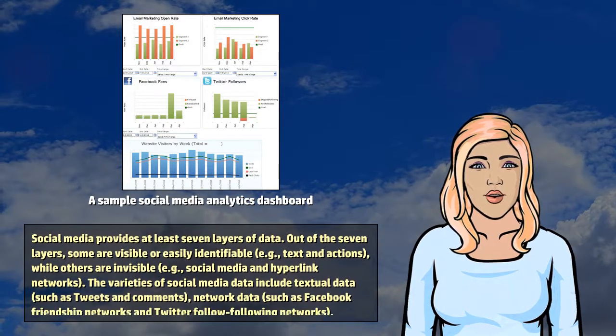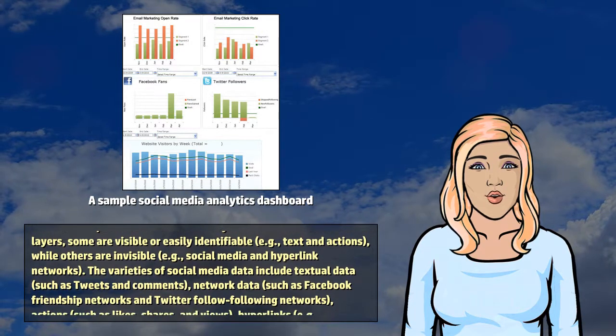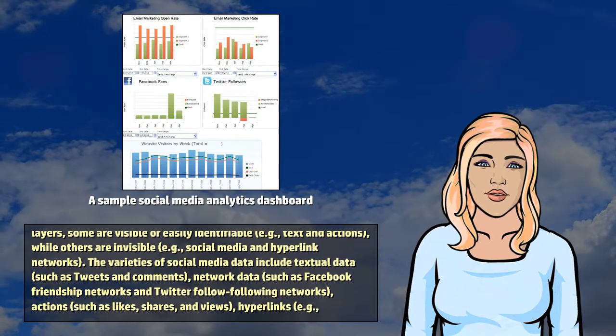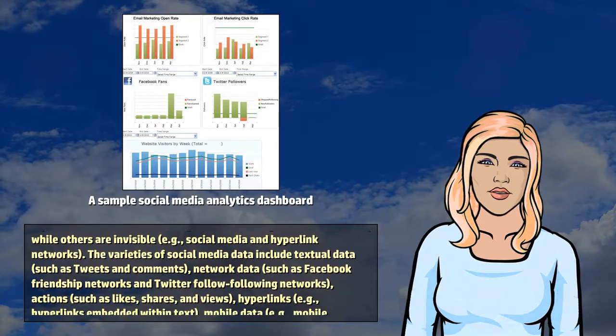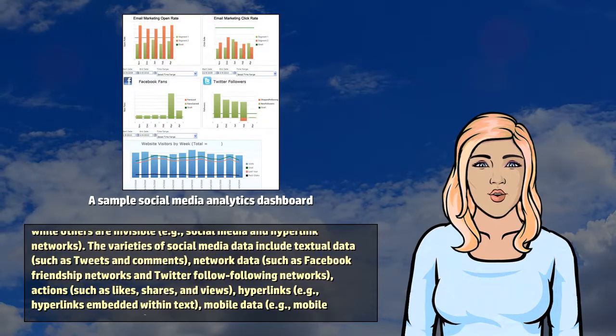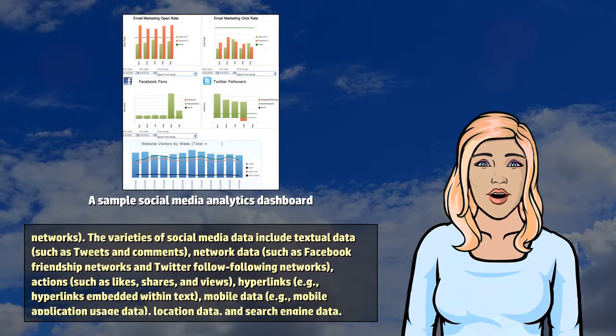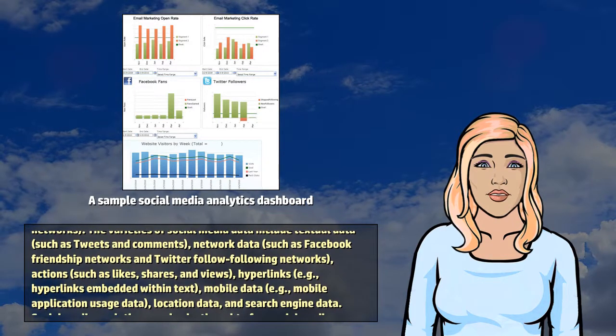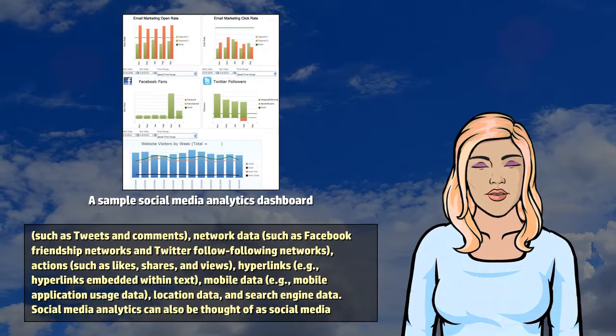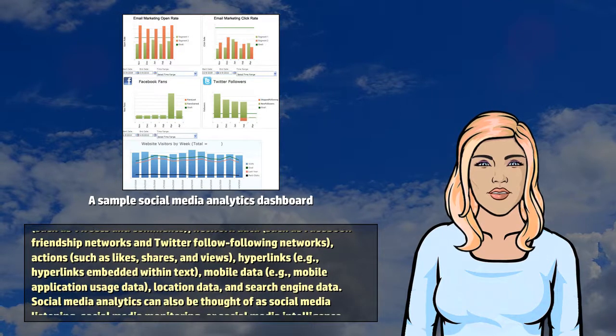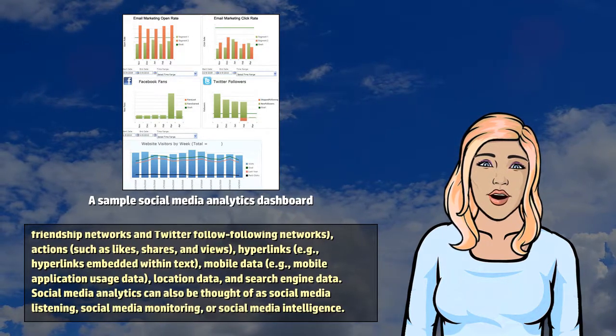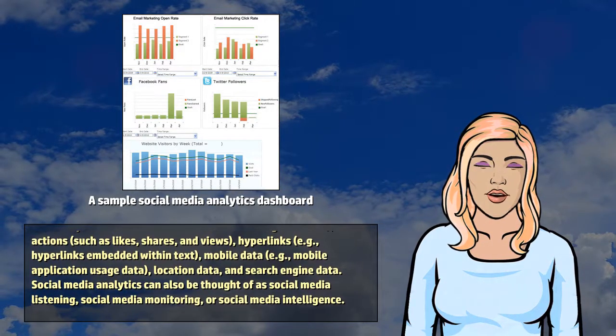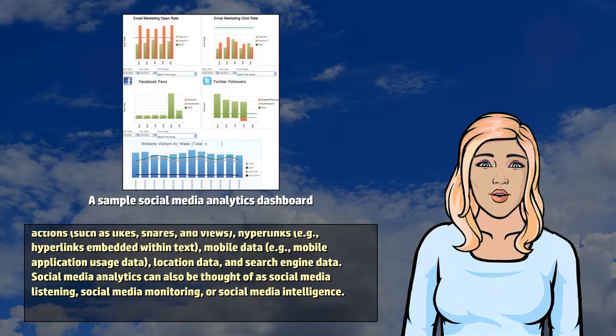The varieties of social media data include textual data such as tweets and comments, network data such as Facebook friendship networks and Twitter follow-following networks, actions such as likes, shares, and views, hyperlinks embedded within text, mobile data such as mobile application usage data, location data, and search engine data.